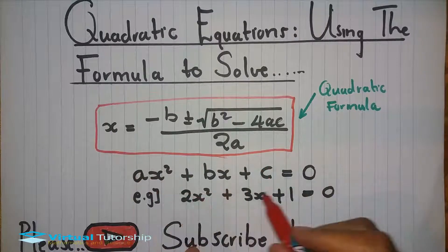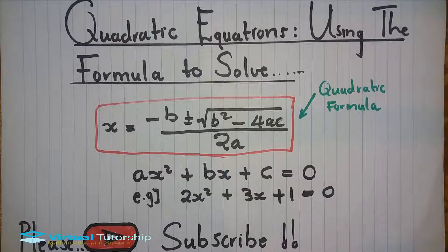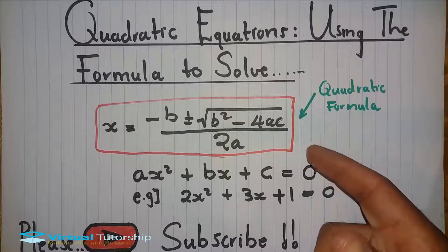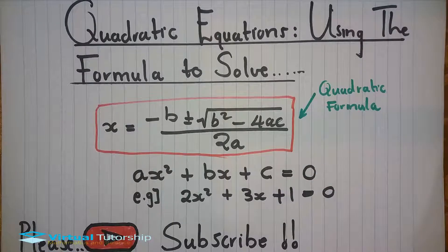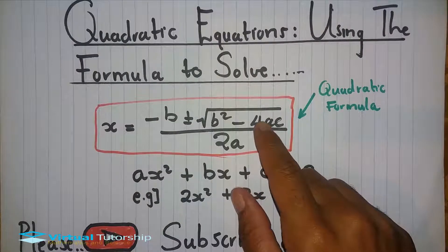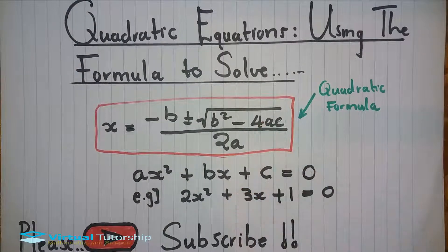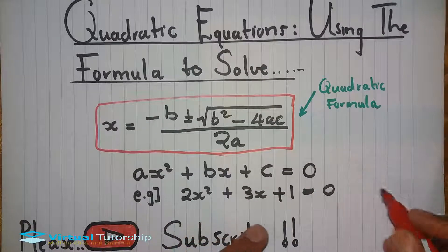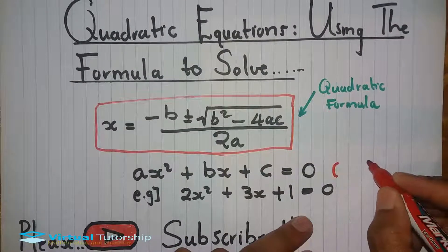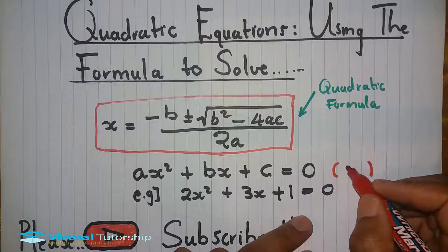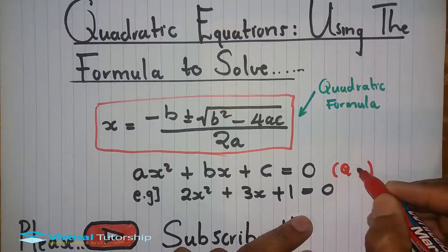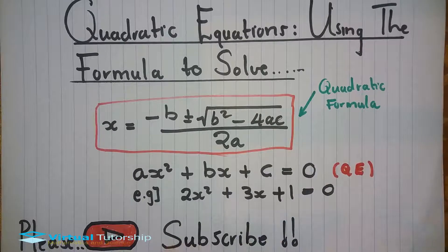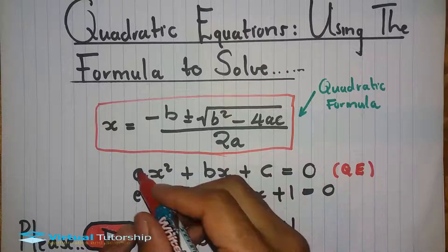Like this equation, we solve it using the method of completing the square. Once we understand this formula, let's talk about it. This is the general equation of a quadratic.